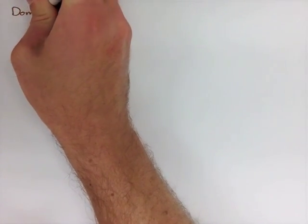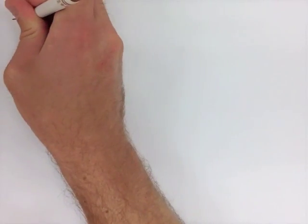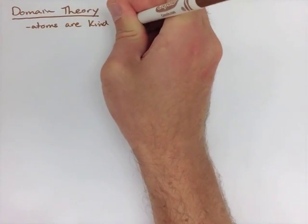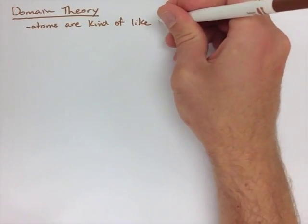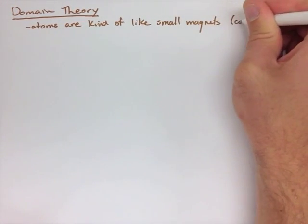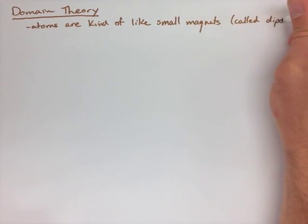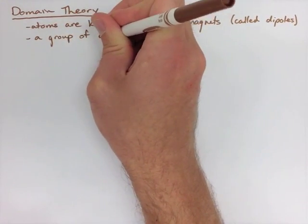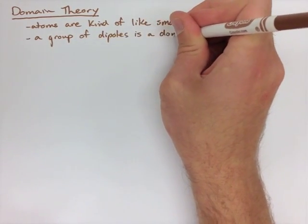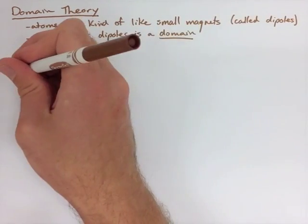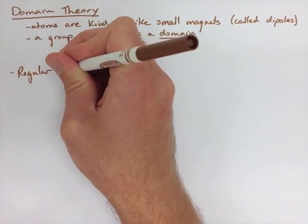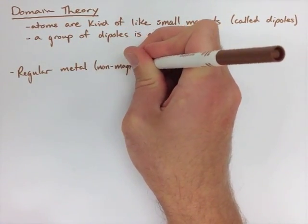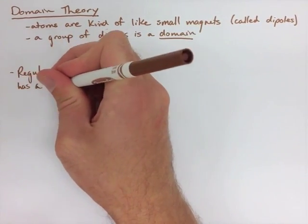The next thing we're going to look at is called domain theory. Now this has a little bit of chemistry in it. But what it's saying is that atoms are kind of like small magnets called dipoles. And a group of dipoles is a domain. So that's where we get the domain theory from. Now, a regular metal or a non-magnetized metal has random alignment of all of its domains. So all of its atoms have a random alignment. It's kind of like the diagram shown below.